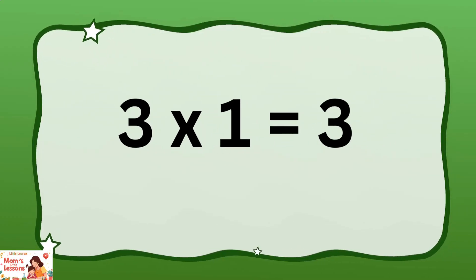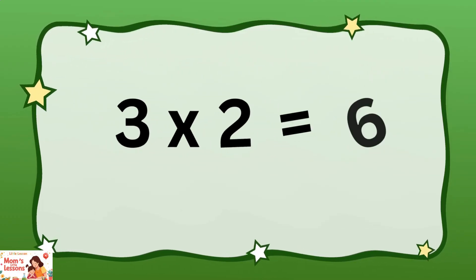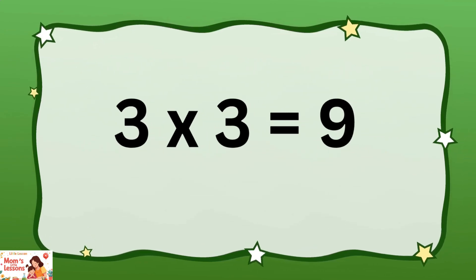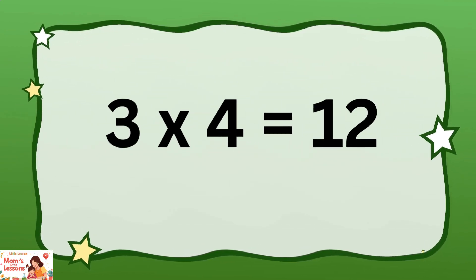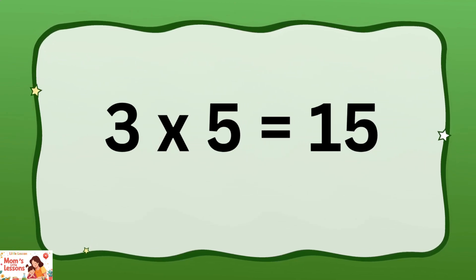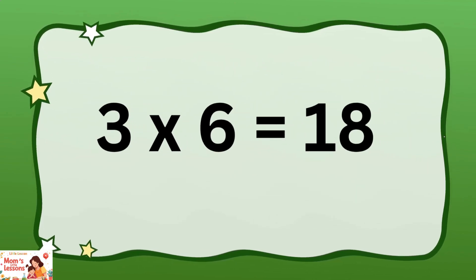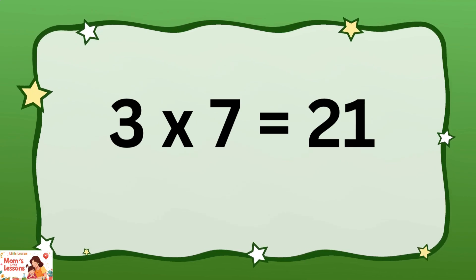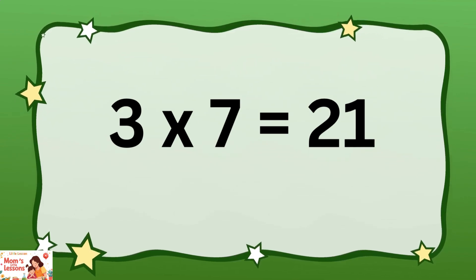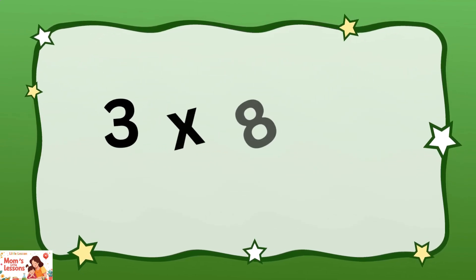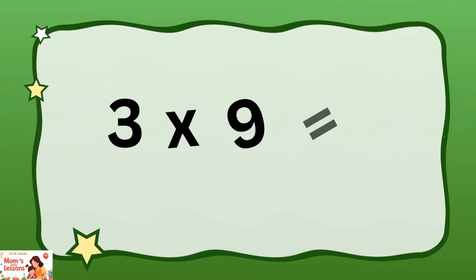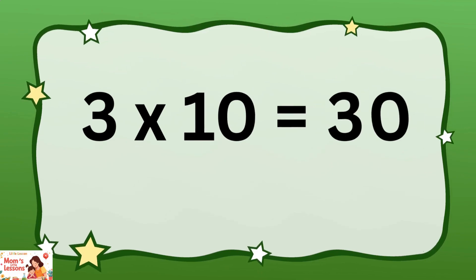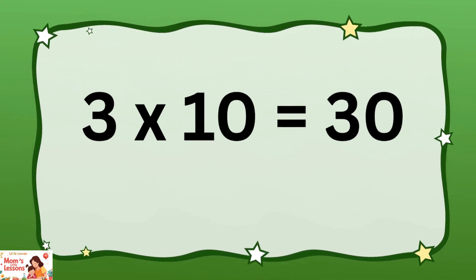Three ones are three, three twos are six, three threes are nine, three fours are twelve, three fives are fifteen, three sixes are eighteen, three sevens are twenty-one, three eights are twenty-four, three nines are twenty-seven, three tens are thirty.